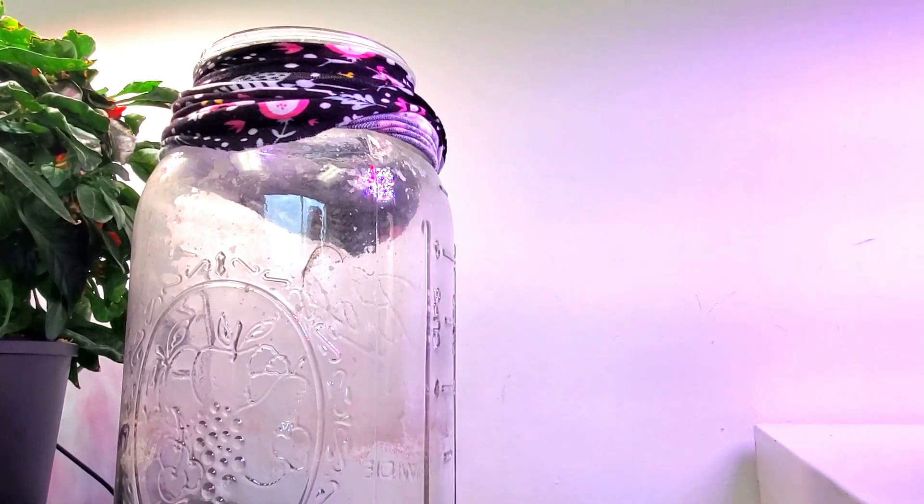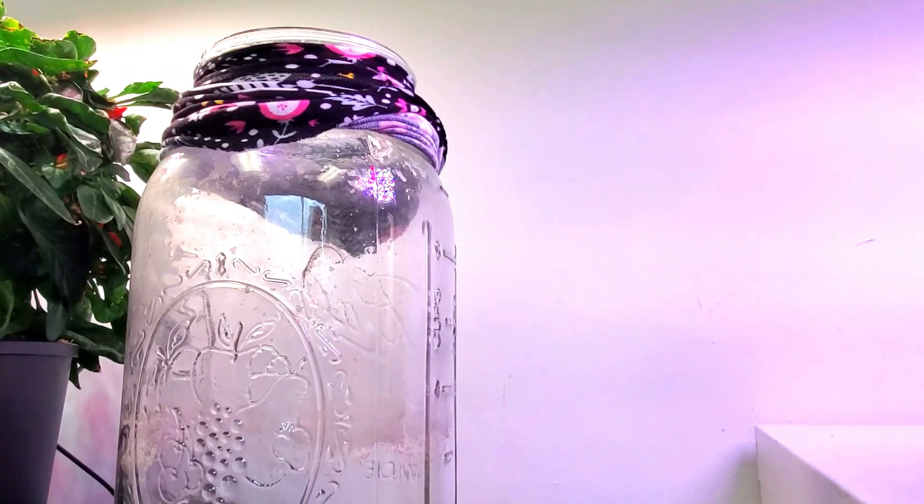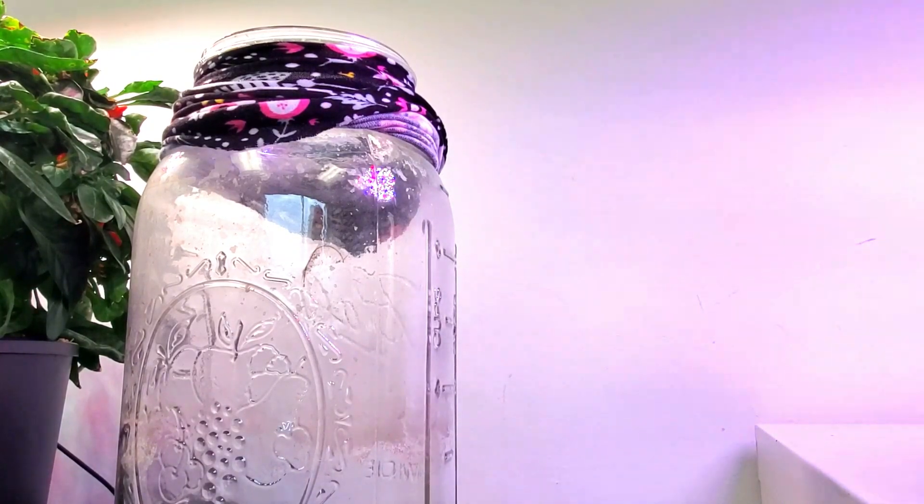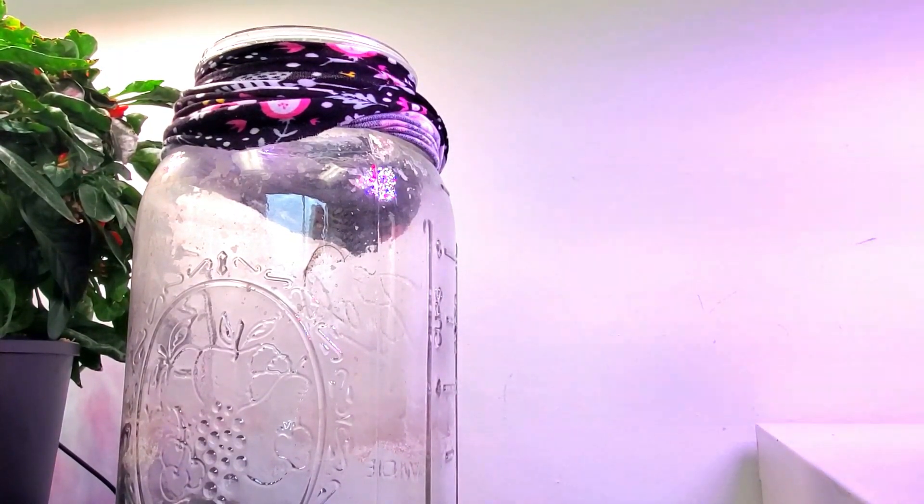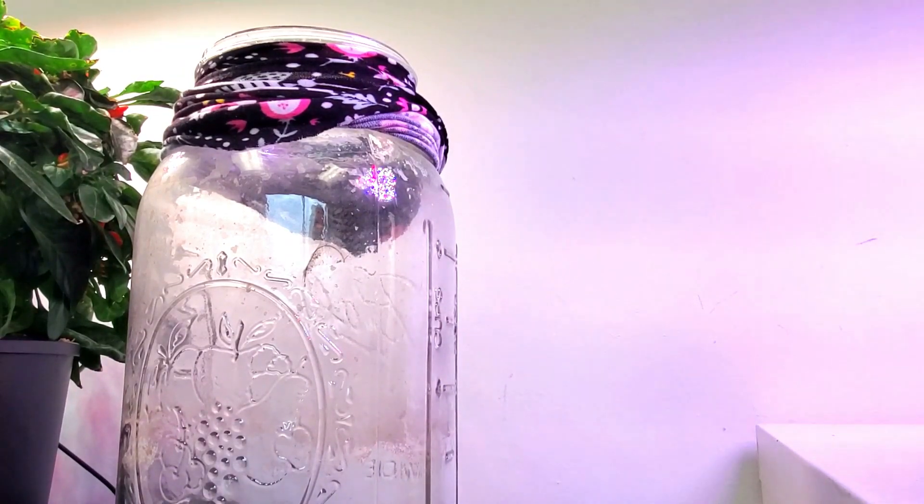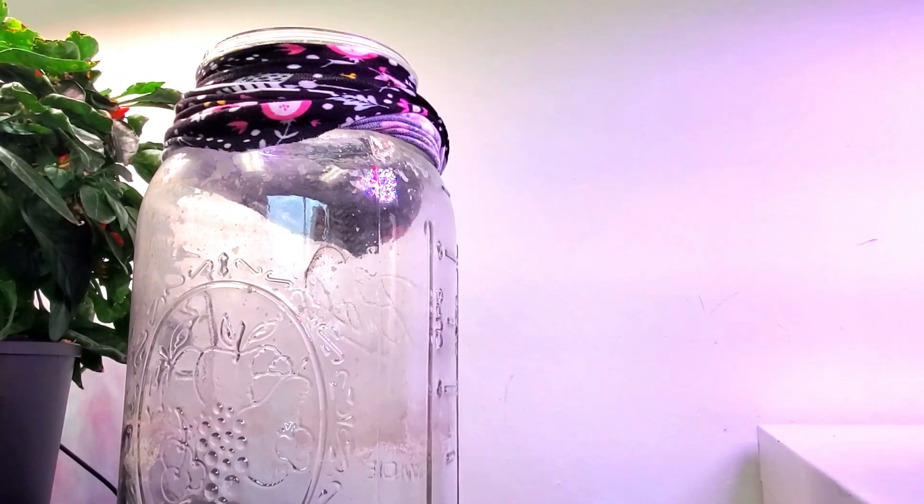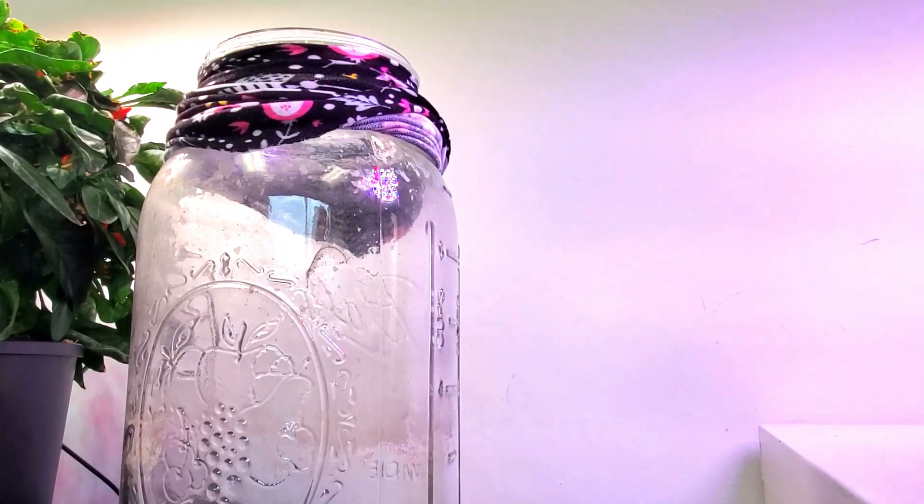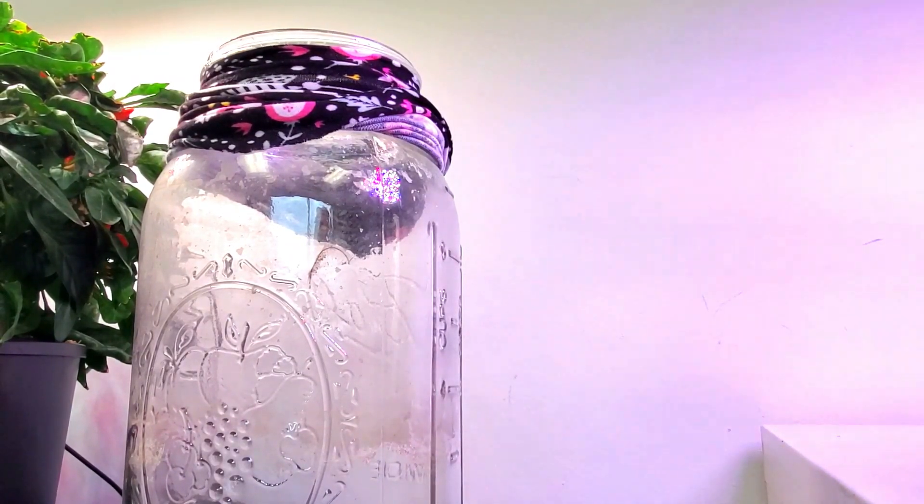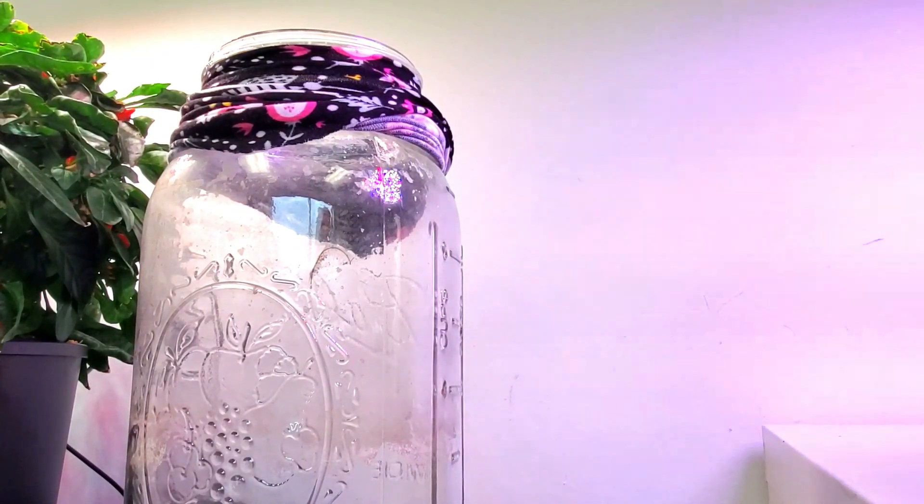This is a half-gallon canning jar, and I've converted it over to a Kratky passive container. What I'm going to do is fill this up with water and a half-strength Dynagro solution.